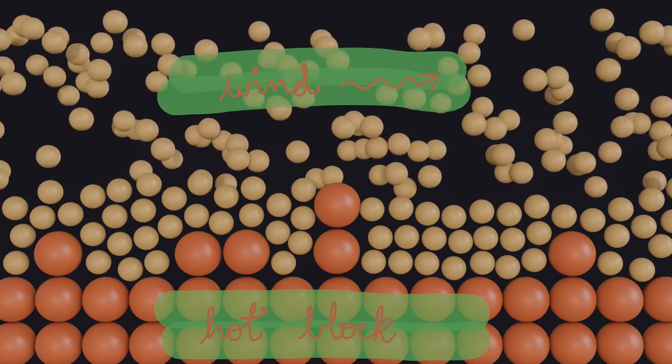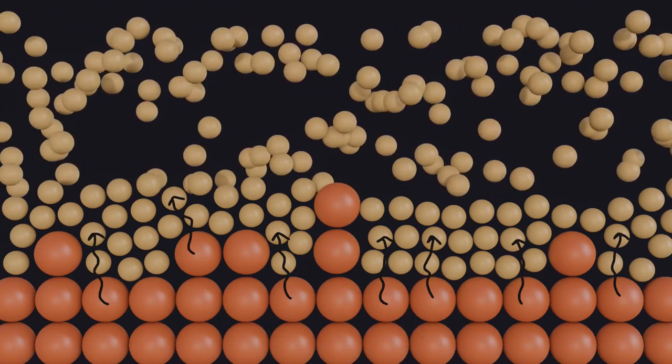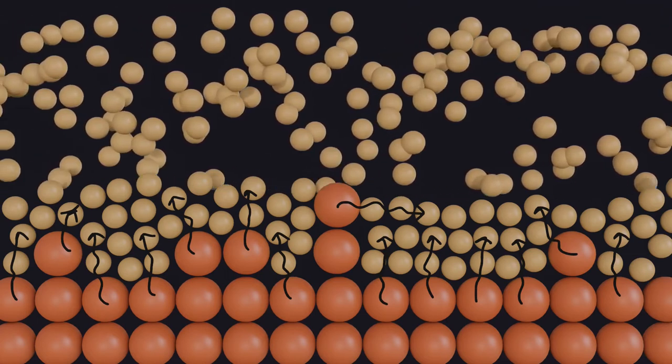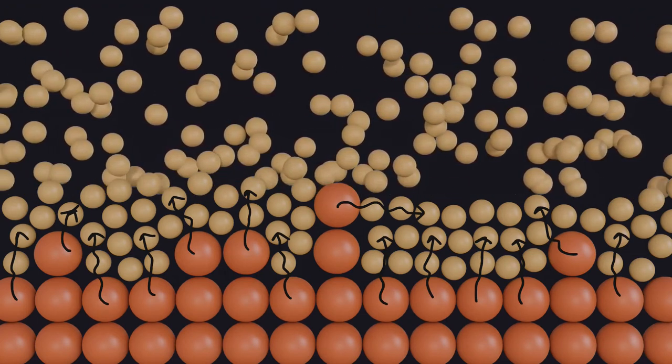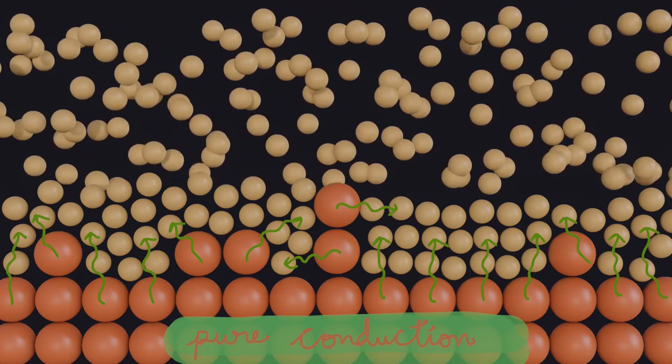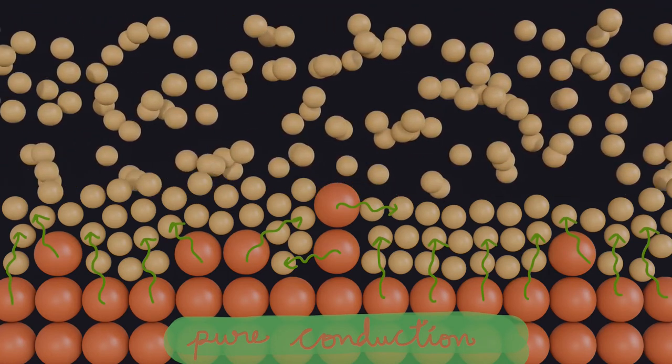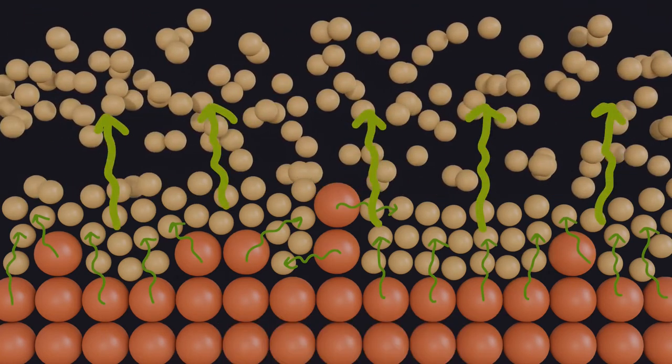Energy is first transferred from the solid surface to the molecules which are exactly beside the solid surface. This happens only because of conduction, then the other molecules sweep in and carry away the heat from there.